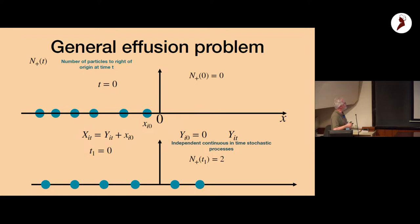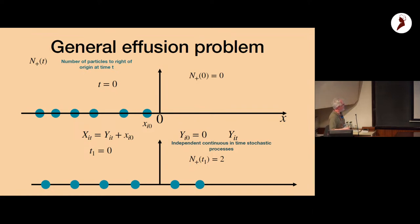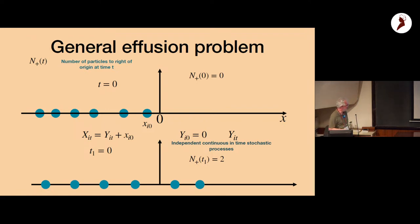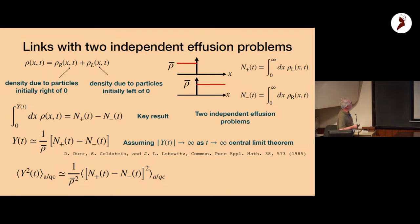There's another approach — the effusion problem — which looks much easier. Start all particles to the left of the line and let them evolve. N⁺(0) = 0 because all particles start to the left. As the system evolves, particles cross to the right. This is like getting off a Boeing plane when you arrive in Bangalore — two independent problems: particles initially on the left that leak right, and the mirror problem.